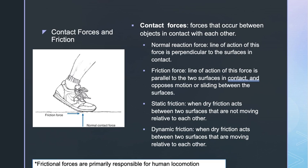Contact forces occur between two objects in contact with each other. The most important contact forces in sport occur between solid objects such as the athlete and some other object. To jump up in the air, you must be in contact with the ground and push down on it — the reaction force from the ground pushes up on you and accelerates you upward. To accelerate yourself forward and upward as you take a running step, you must push backward and downward against the ground, and the reaction force pushes forward and upward against you.